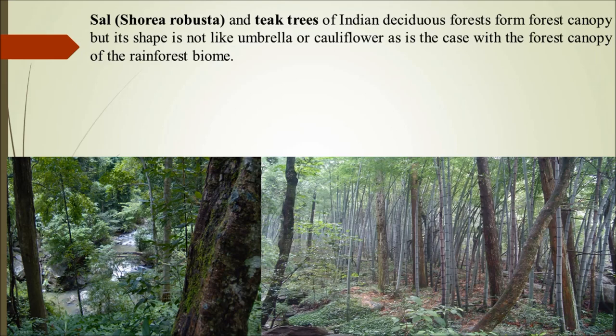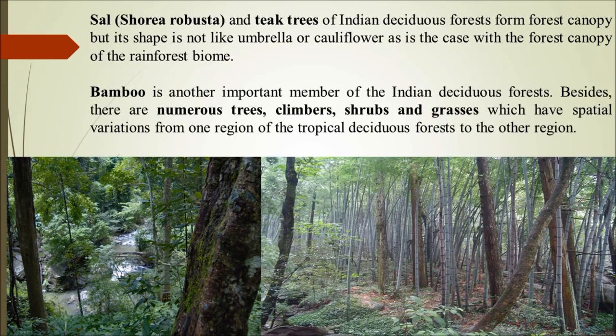Sal (Shorea robusta) and teak trees of Indian deciduous forests form the forest canopy — the first two vertical layers. The canopy shape here is not like the umbrella or cauliflower shape seen in the rainforest biome. Bamboo is another important member of Indian deciduous forests. Besides these, there are numerous trees, climbers, shrubs, and grasses — species richness is present but not as much as in the evergreen forest.